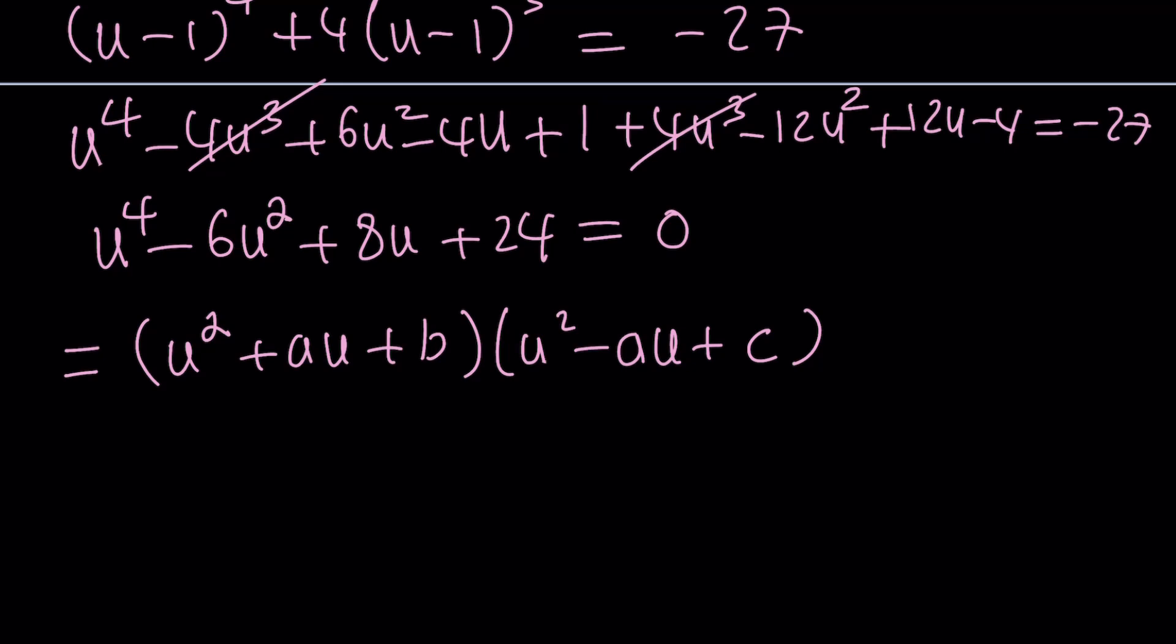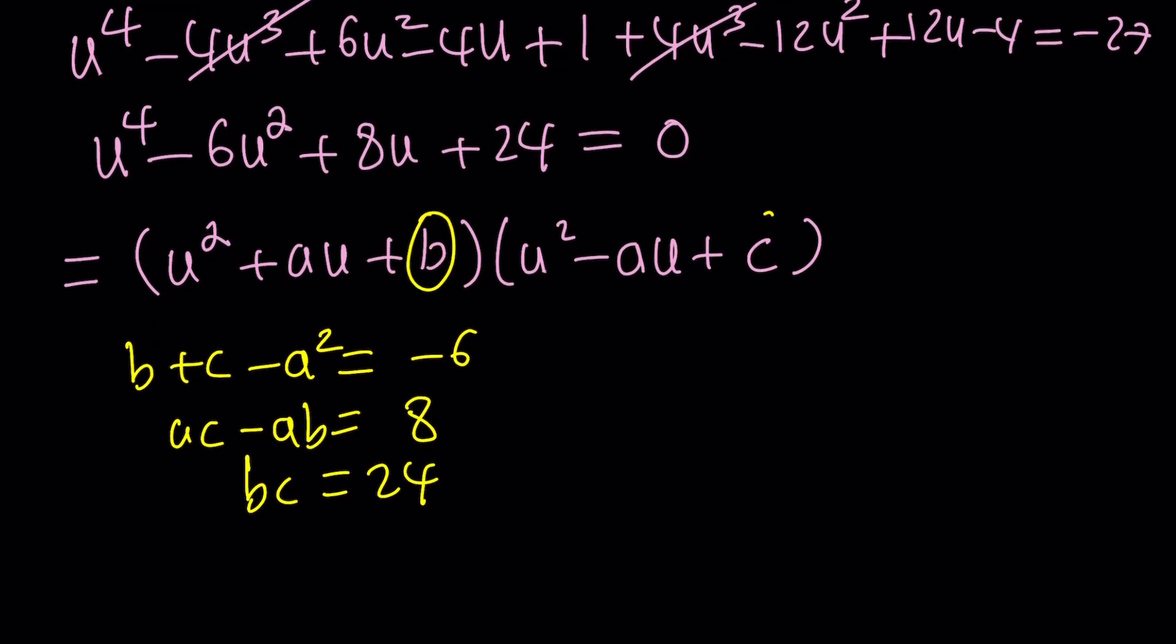After you expand everything, you're going to get a system of equations. Here's what you're going to get: b plus c minus a squared equals negative 6, ac minus ab equals 8, and bc equals 24. You could go on the factors of 24 and test it out, but instead of guess and check, let's solve this.